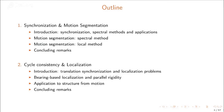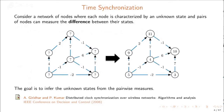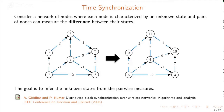I will start with an introduction to the synchronization problem, where I will briefly explain spectral methods and possible applications. This is a very simple example of synchronization called time synchronization. Consider a network of nodes where each node is characterized by an unknown state, and pairs of nodes can measure the difference between their states. The task is to infer the unknown states from the pairwise measures — this is clock or time synchronization.